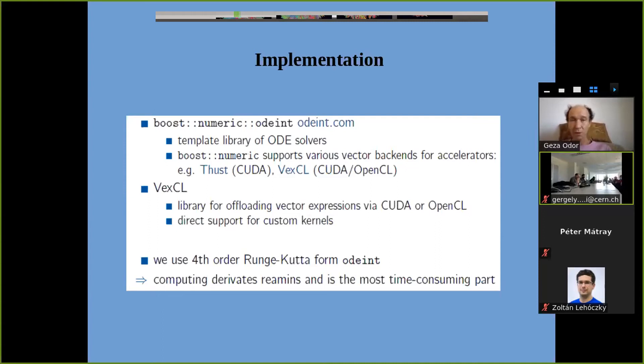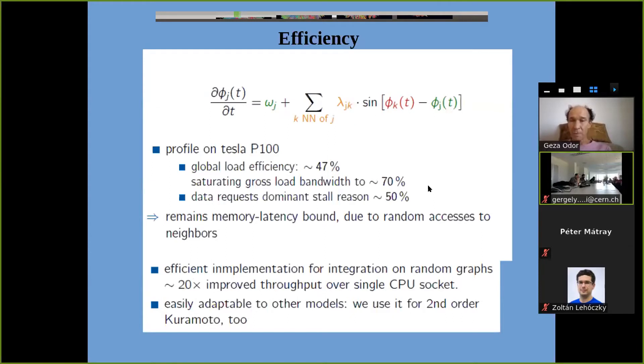What we used were just standard libraries. The Boost libraries which is a template library for solving ordinary differential equations, and the program was written in CUDA. Another library Jeffrey used was VexCL which is a library for offloading vector expressions, also available both for CUDA and OpenCL. We used these libraries for solving the equation with the fourth order Runge-Kutta solver. For the implementation and efficiency, just to remind you I provide some figures which Jeffrey already showed. It was measured on a Tesla P100 card and the main conclusion is that this remains to be a memory latency bound problem due to the random access of neighbors. But the implementation could achieve the integration of random graphs with a speed up of something like 20 times improved throughput over a single CPU socket. We want to mention that this method is also adaptable to other models something like the second order Kuramoto which we are also using for describing electrical power grids.